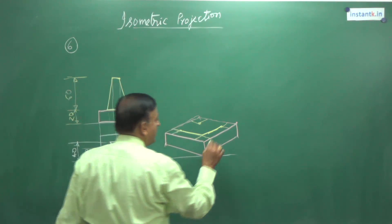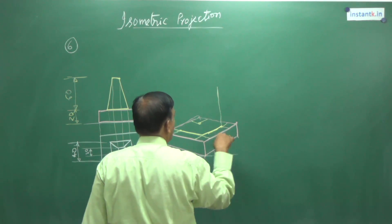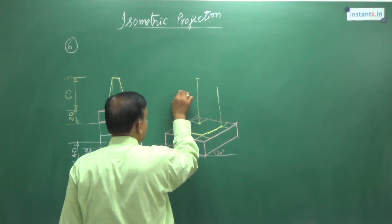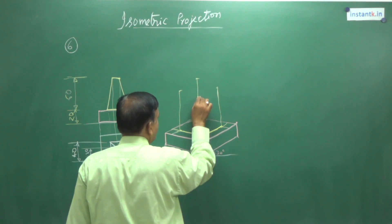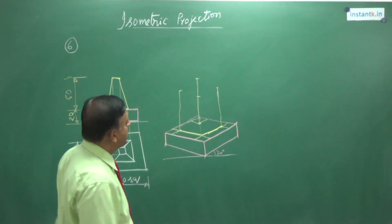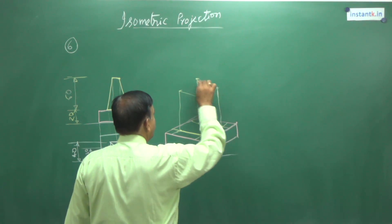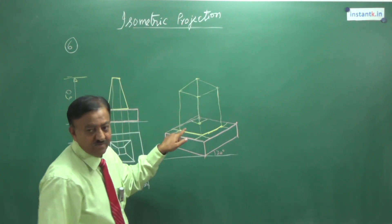So I will go up by 60 mm. From all these points I will go up 60 mm. From this point also. So from each of these points, what I have done is I went up by 60 mm, and I have got a square again of 40 mm side.